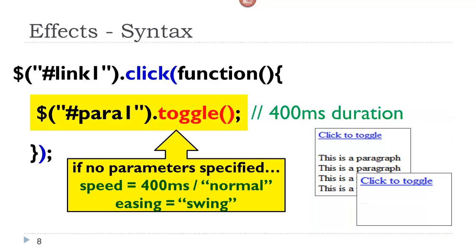all I have to do is code in the name of the selector, .toggle. So when I am the click event the first time around, it will hide it. The second time around, it will show it. And because I have not specified any parameters, the default speed is 400 milliseconds, and the default easing value is swing.